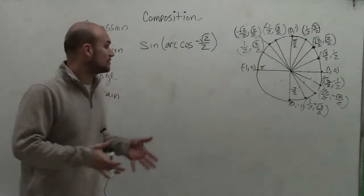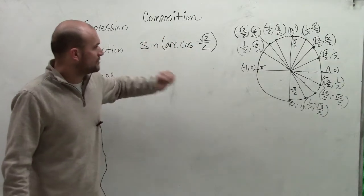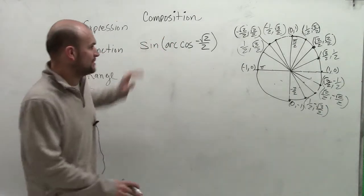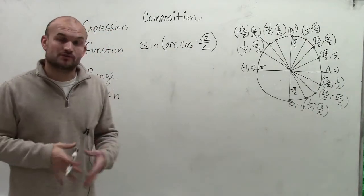OK, so when doing the inverse, or when using the composition of sine arc cosine of negative square root of 2 over 2, the first thing I want to do is evaluate for my innermost function, which would be the inverse cosine of negative square root of 2 over 2.